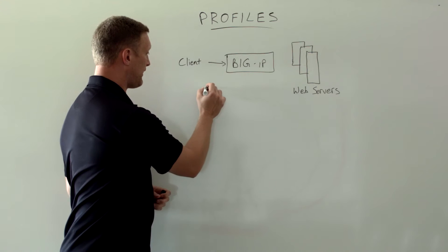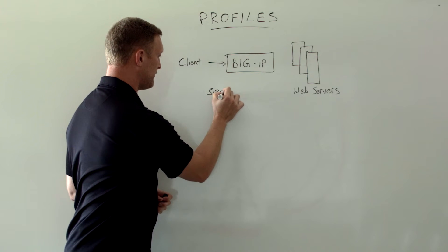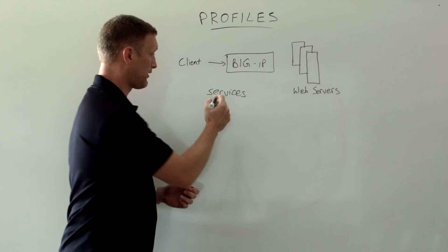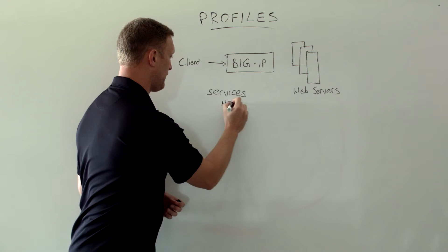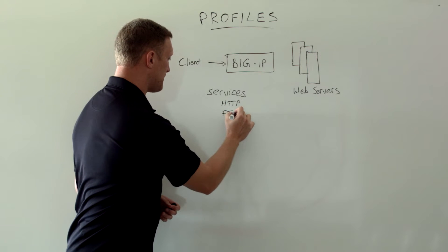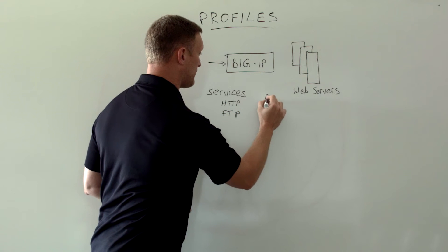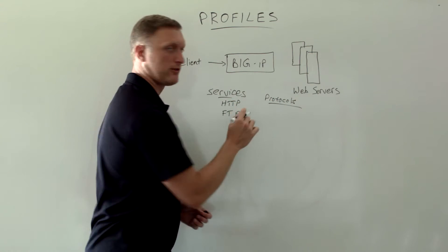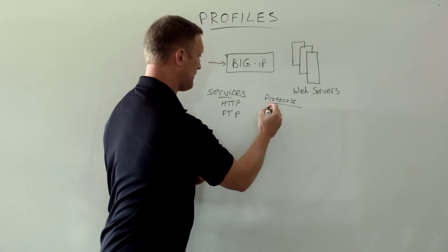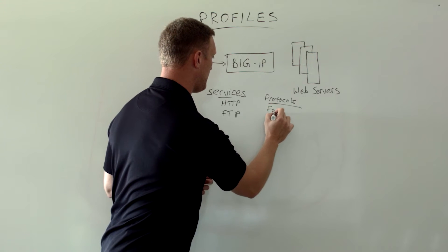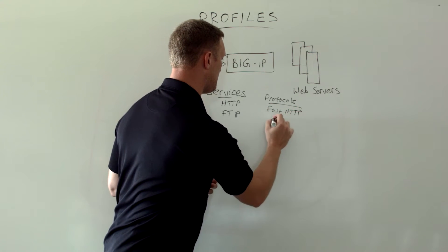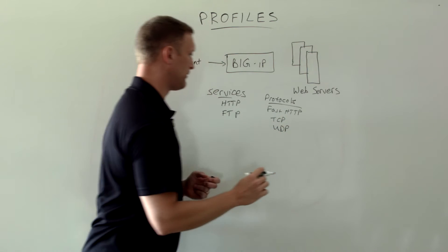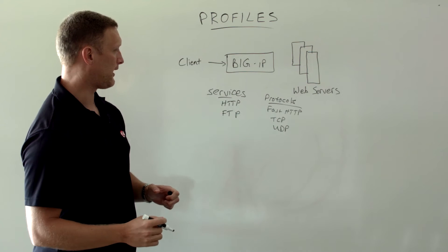The first type is services — different services that you may run. These are going to be things like HTTP or FTP. Then there are protocols — you're going to have maybe Fast HTTP, TCP, or maybe UDP. Those are some popular ones, and these are not all of them, but they give you an idea.